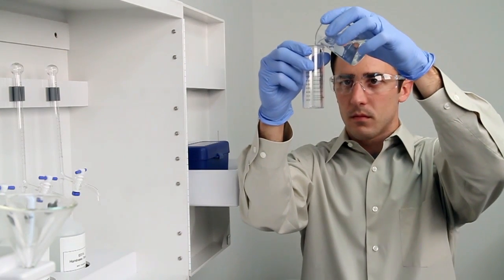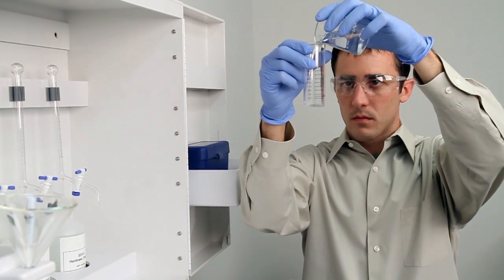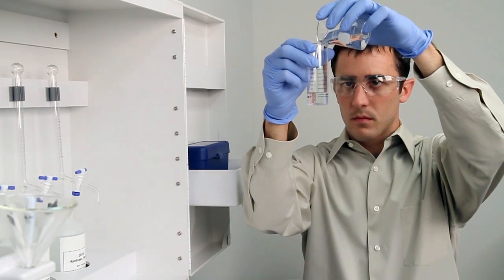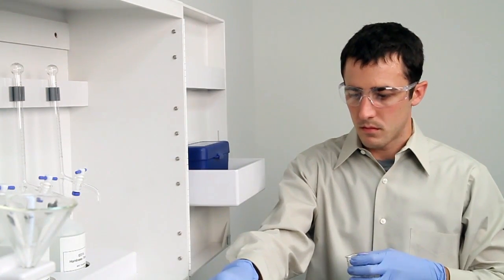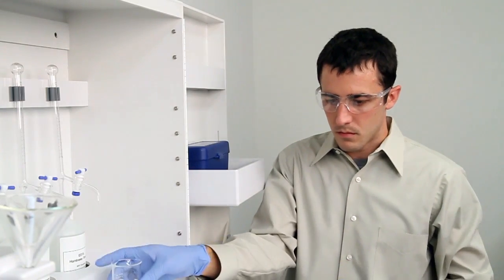To get an accurate sample, hold the vial close to eye level. Accuracy is very important during this step. Once you feel you have an accurate sample, place the vial on a level surface and bend down to eye level to verify.